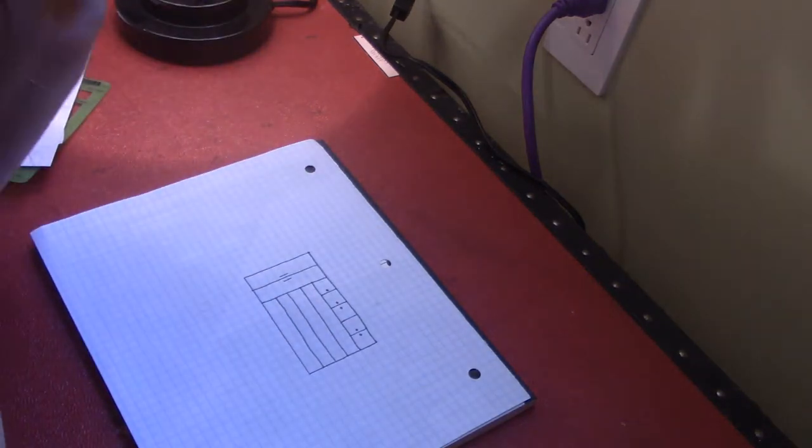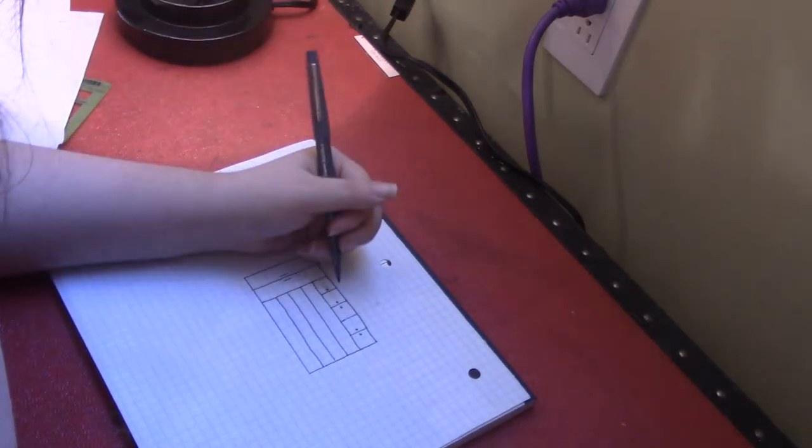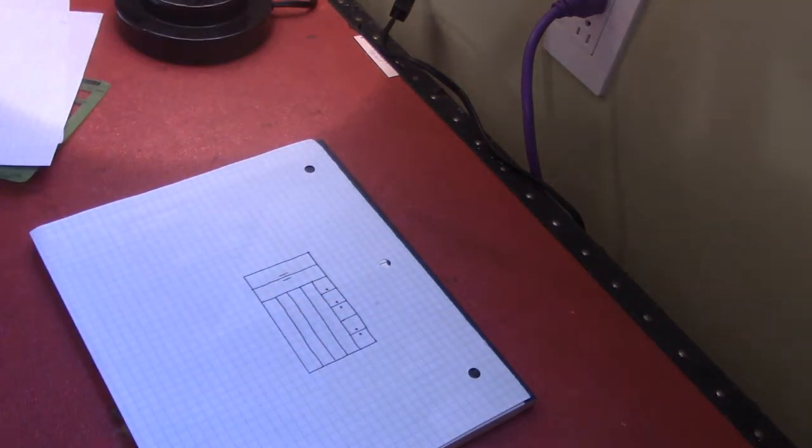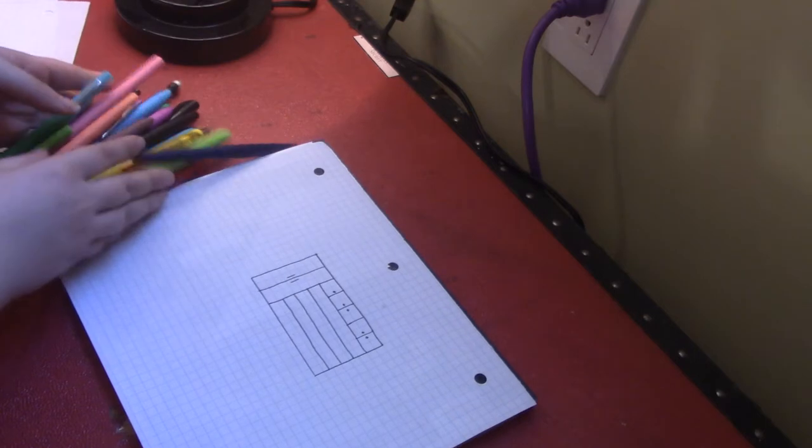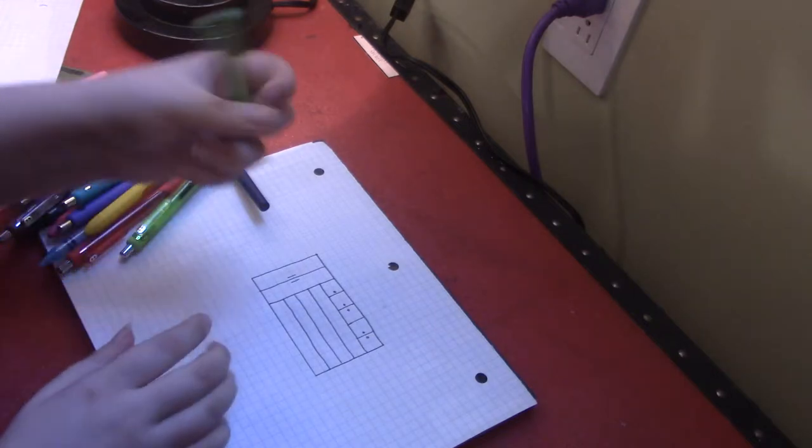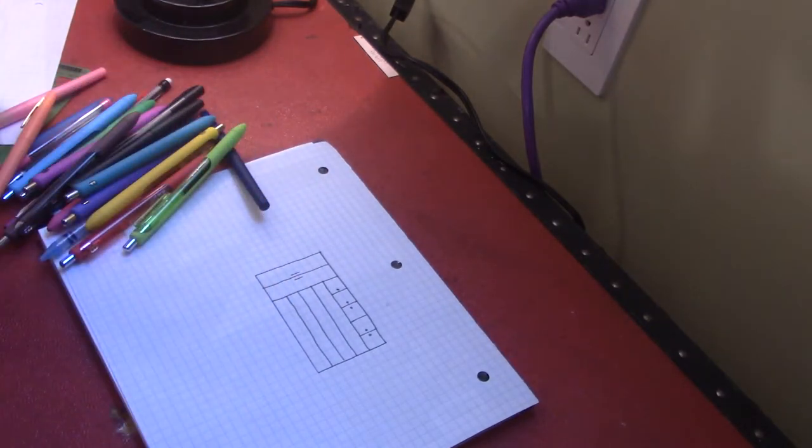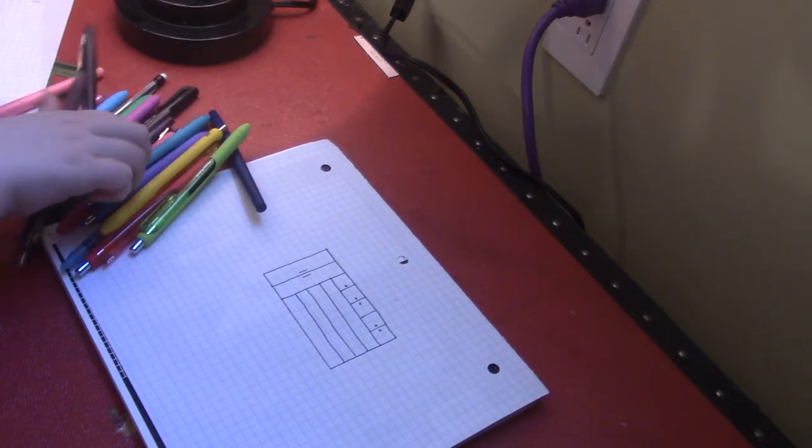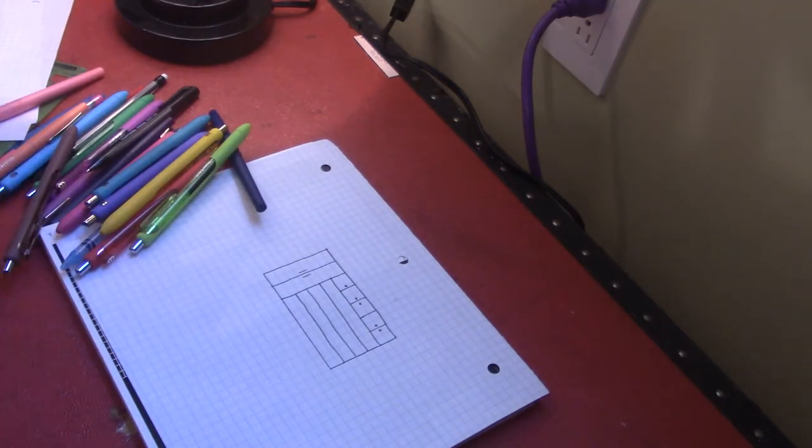There's that. And now we're just gonna draw some details in. I have markers for that this time, markers and pens instead of colored pencils. I want to add some storage bins down here, which gives me three shelves to play with for things that I want to display.